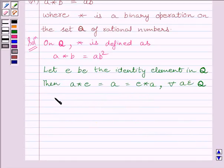Now, first let us find a star e. This equals ae squared, which must equal a.